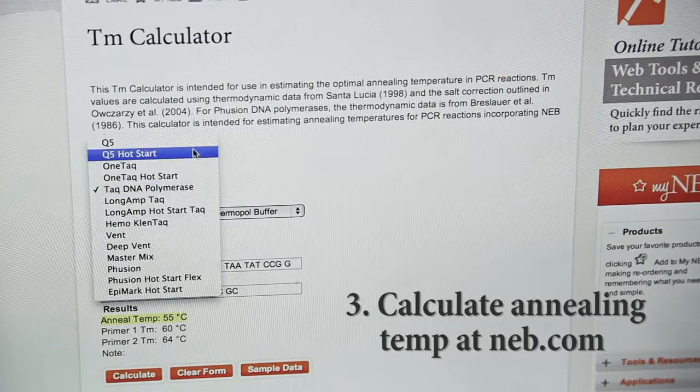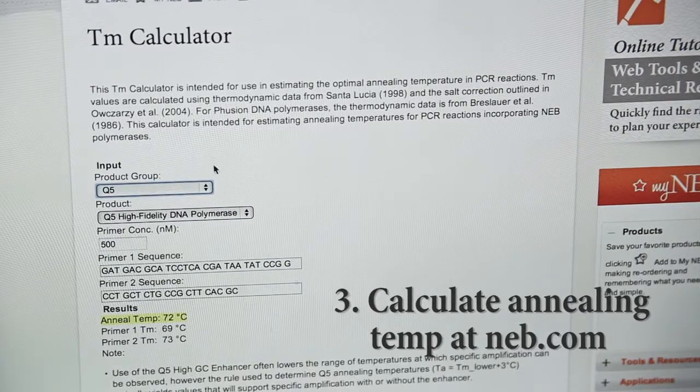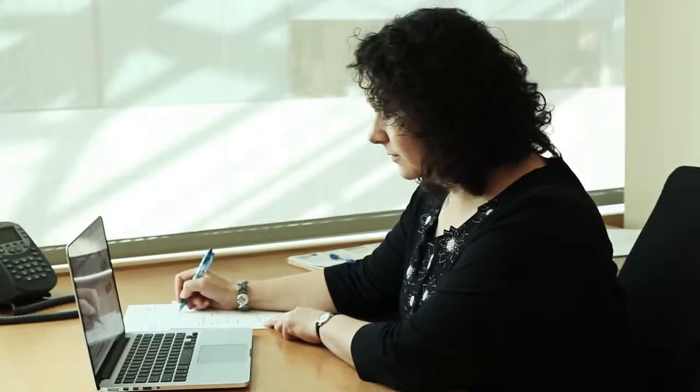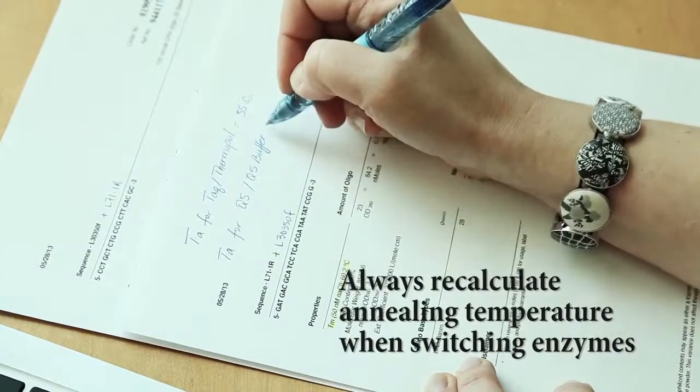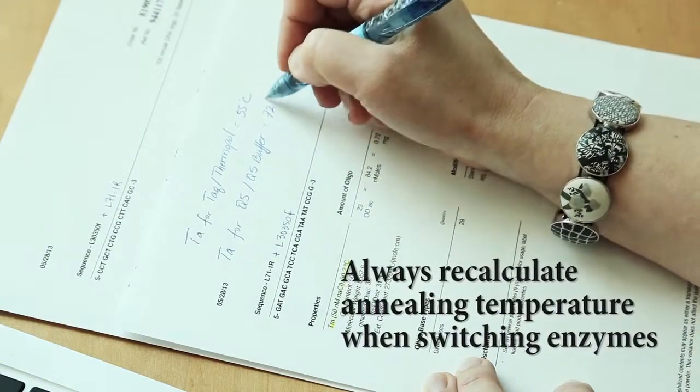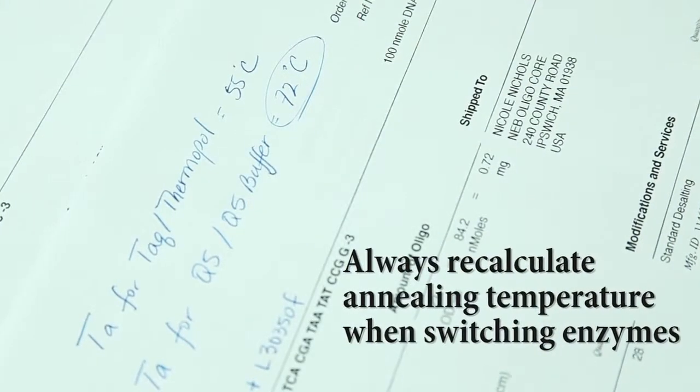Third, calculate your annealing temperature using the TM calculator on NEB.com. Not all enzymes are alike and buffer components can play a critical role in determining the annealing temperature. If you're switching to a new enzyme, you should always recalculate the annealing temperature, even if you've used these primers with another enzyme in the past. The TM calculator on the NEB.com website takes into account the specific composition of the buffer when determining the annealing temperature.